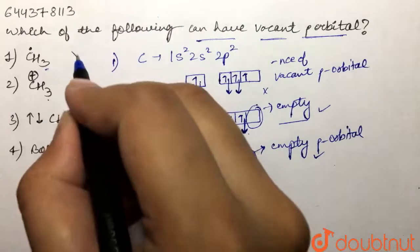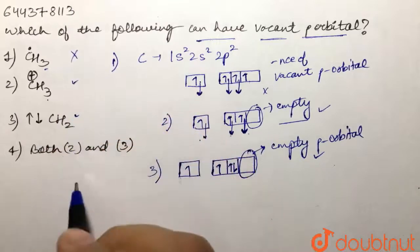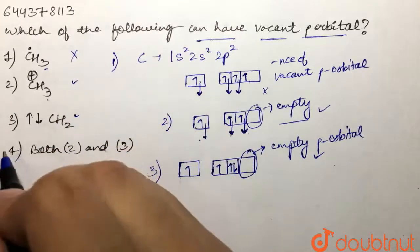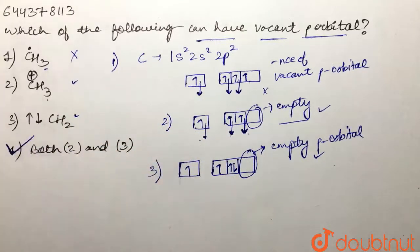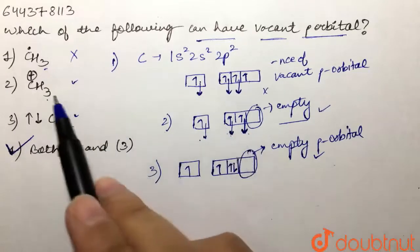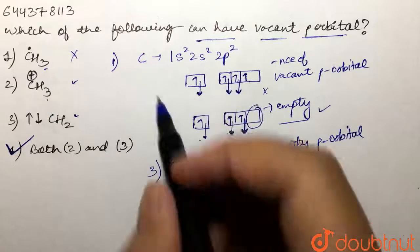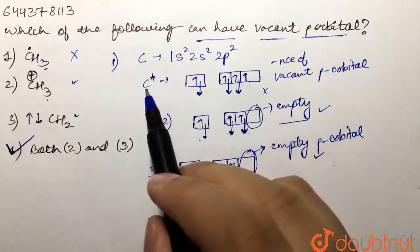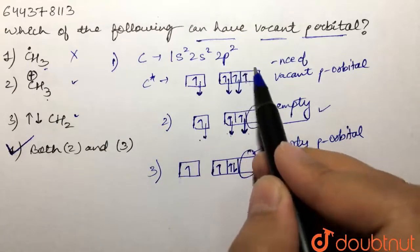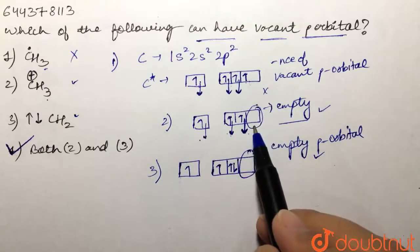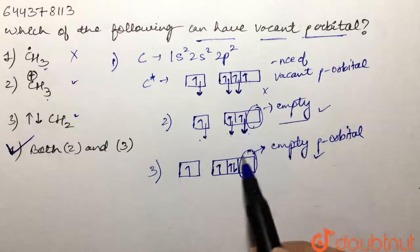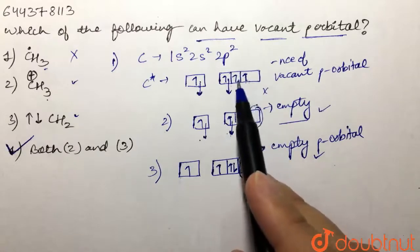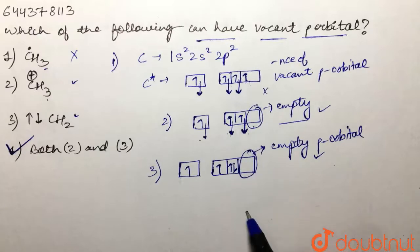The fourth option says both two and three — that would be the correct answer, because the first is not correct, but the second and third are correct. In the second case, one electron is lost from the p orbital giving an empty orbital, and in singlet carbene the two electrons are present in the same orbital, leaving an empty p orbital. So our answer is option four.